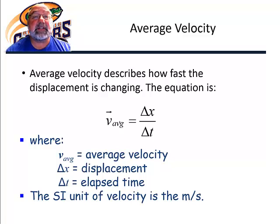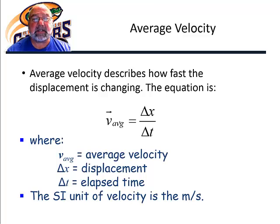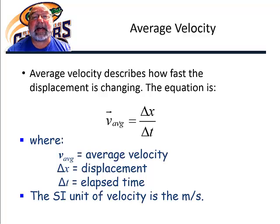Average velocity describes what the displacement is doing — how fast the displacement is changing. The equation is v-average with an arrow over the v, and that stands for v being a vector quantity. It identifies this as velocity because velocity has both an amount, a magnitude, and a direction. The formula is delta x, which stands for change in position or displacement, divided by the time interval, the change in time.